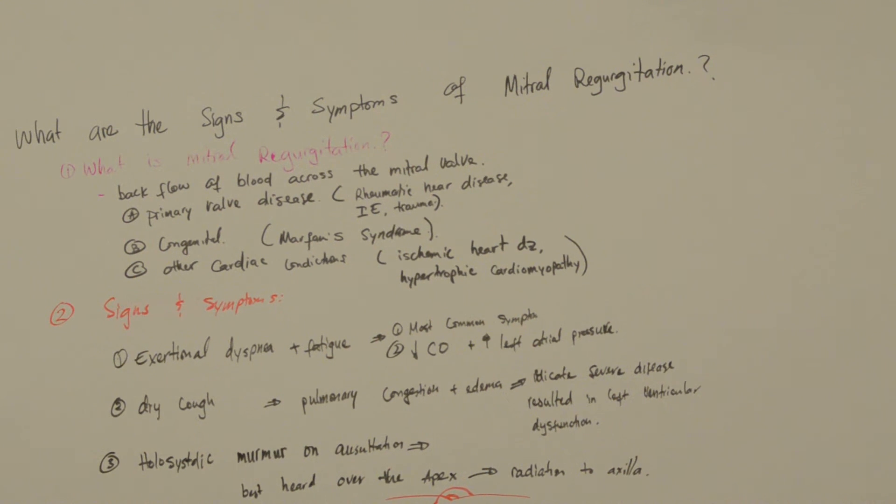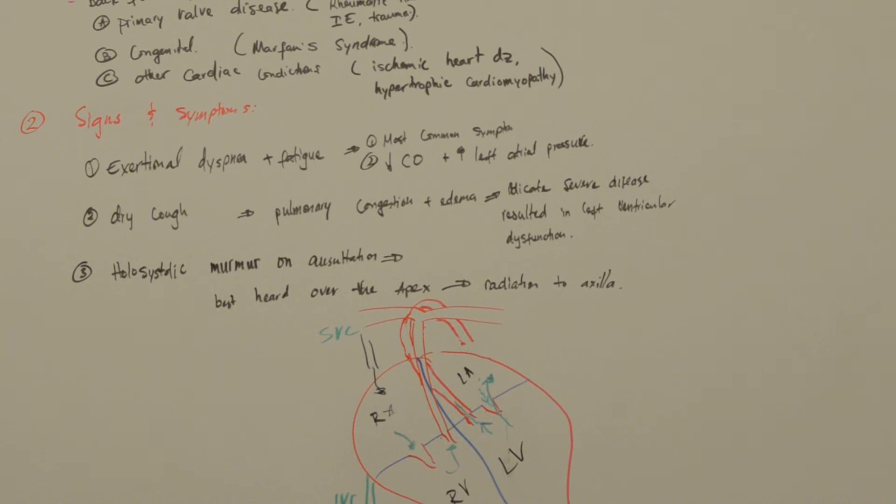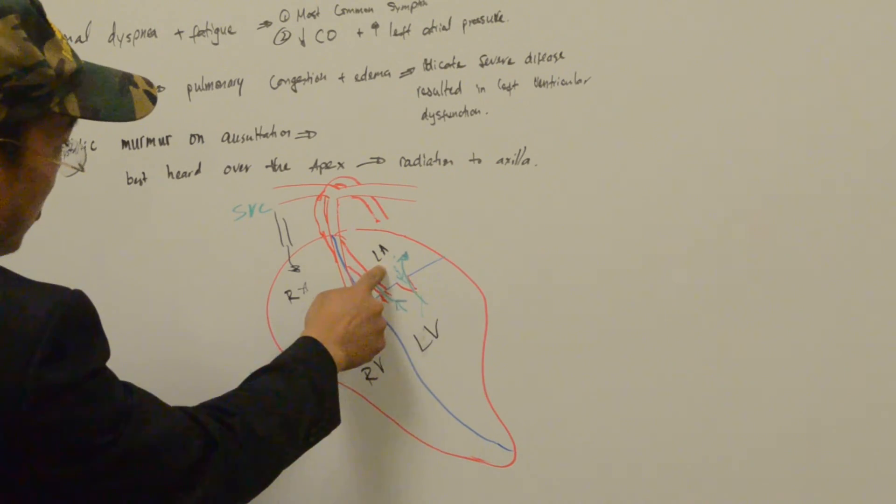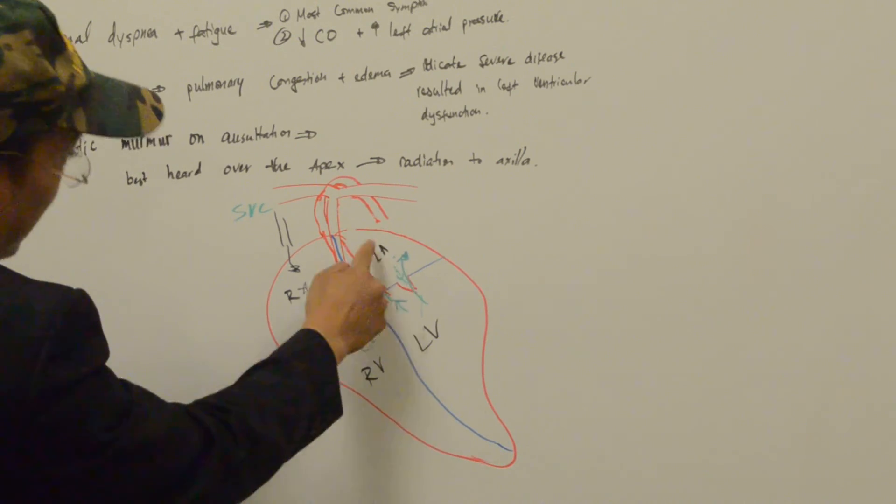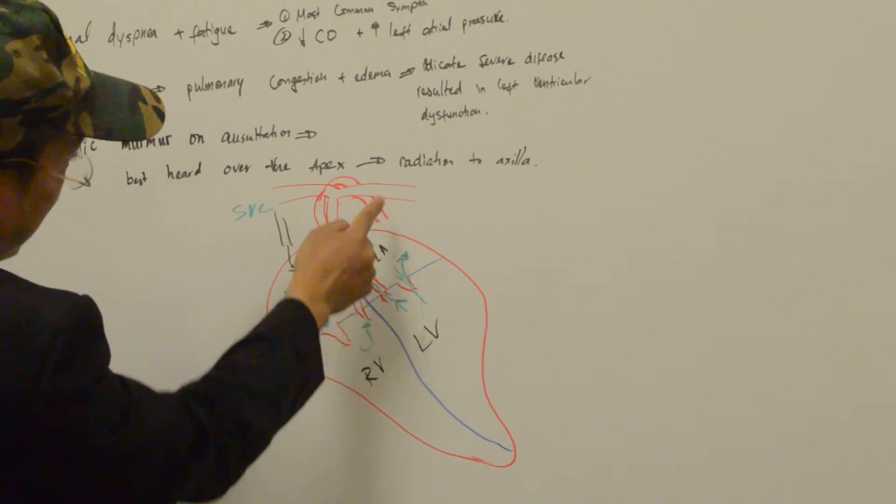What are the symptoms? The symptoms include exertional dyspnea and fatigue, which are the most common symptoms in patients with mitral regurgitation. This is due to decreased cardiac output, because instead of blood flowing from the left atrium into the left ventricle and out through the aortic valve into the aorta...